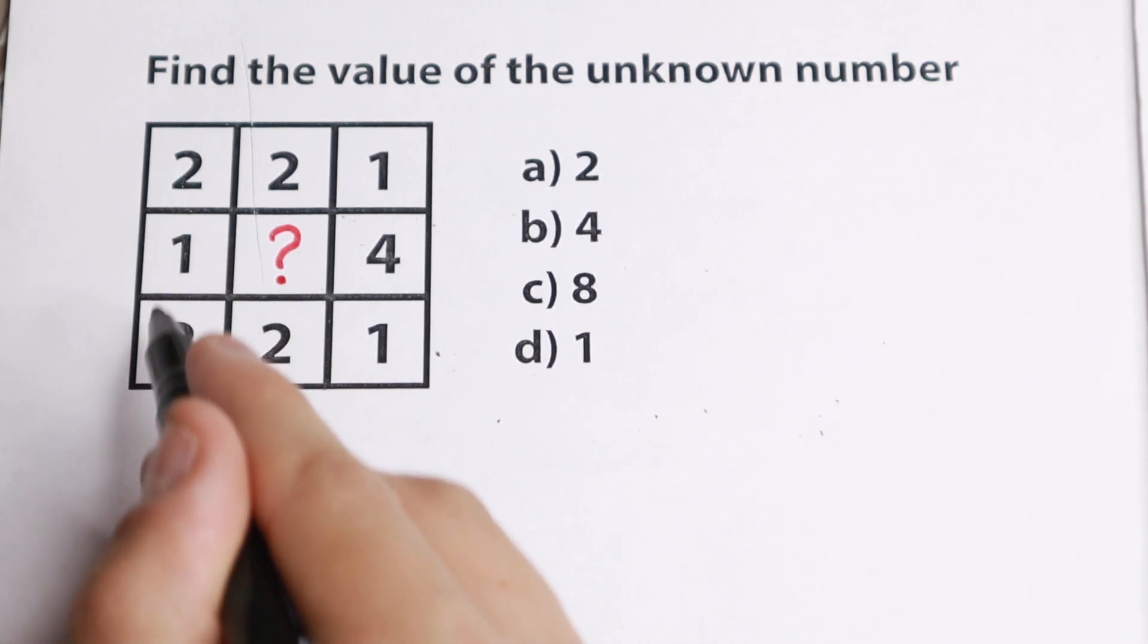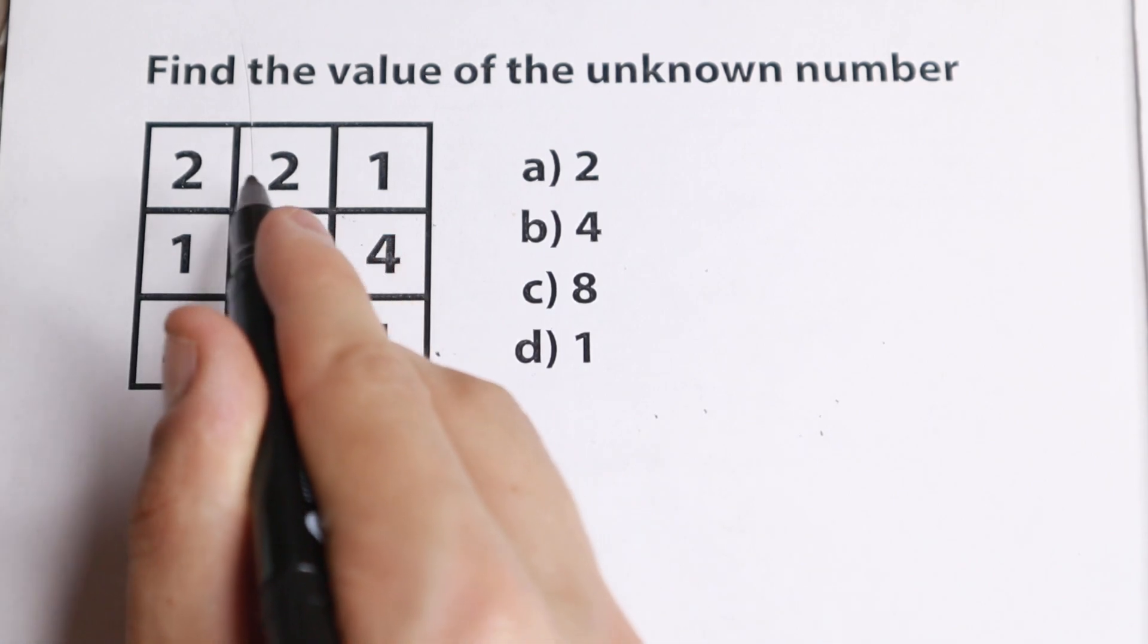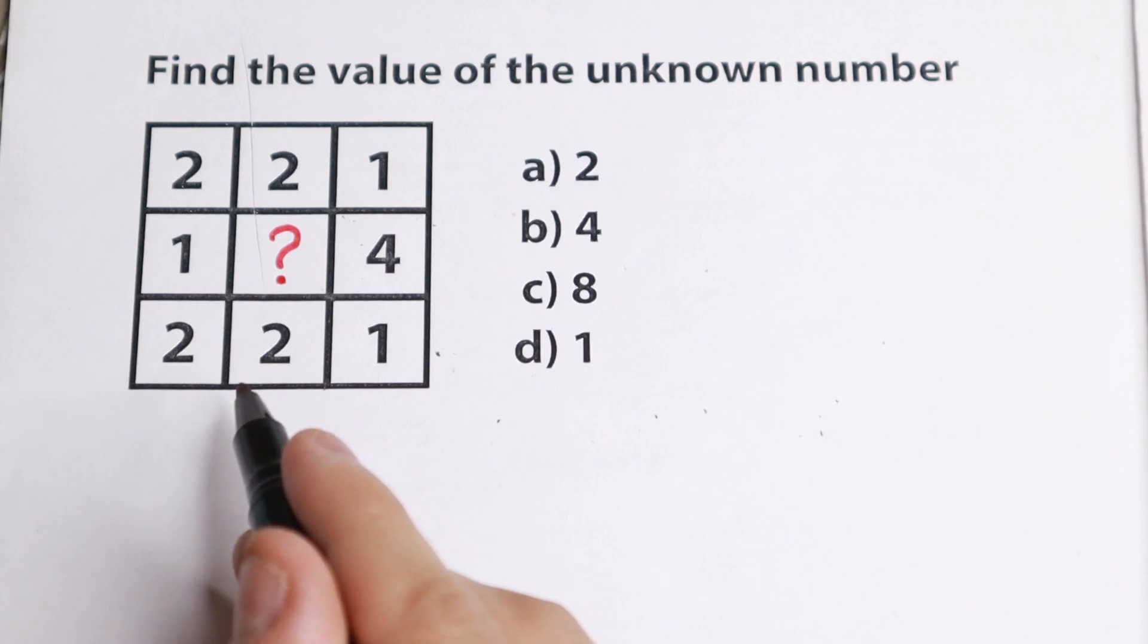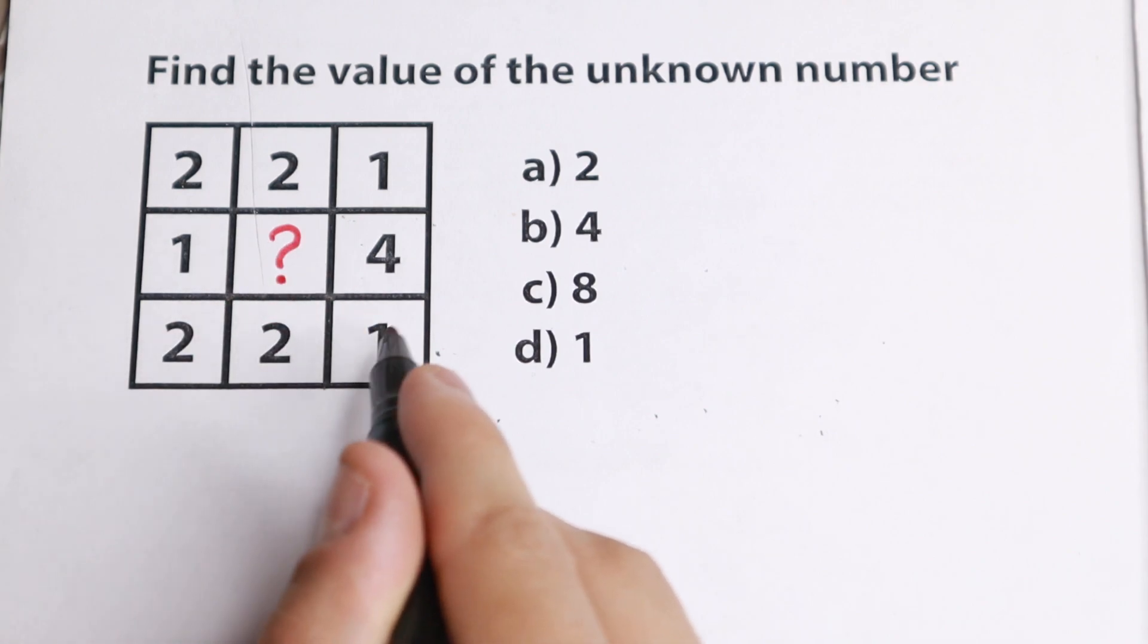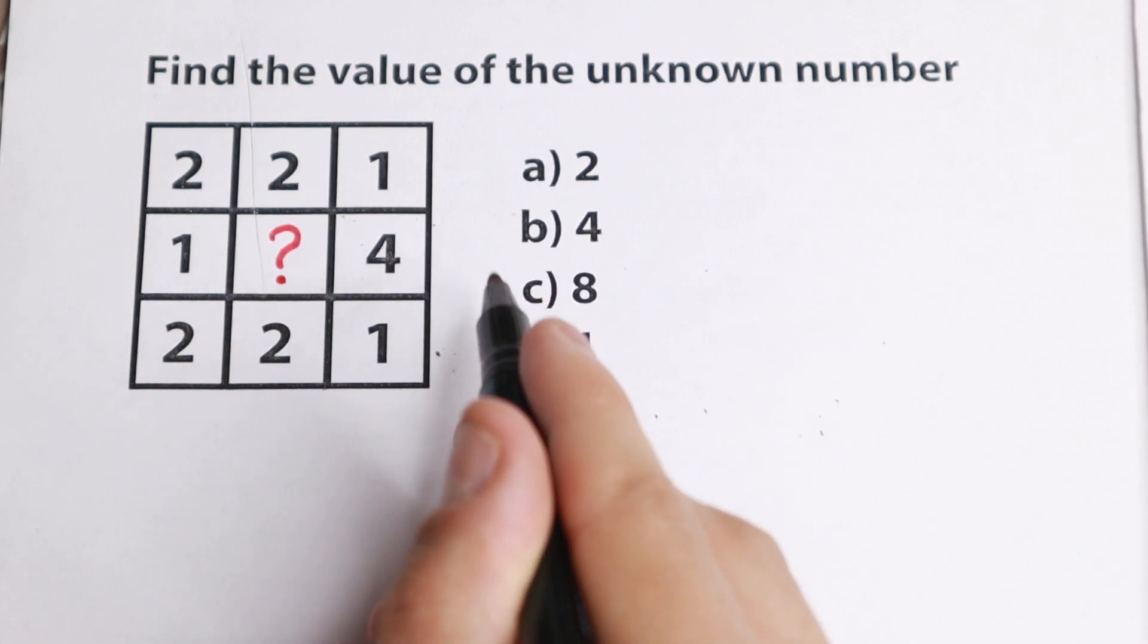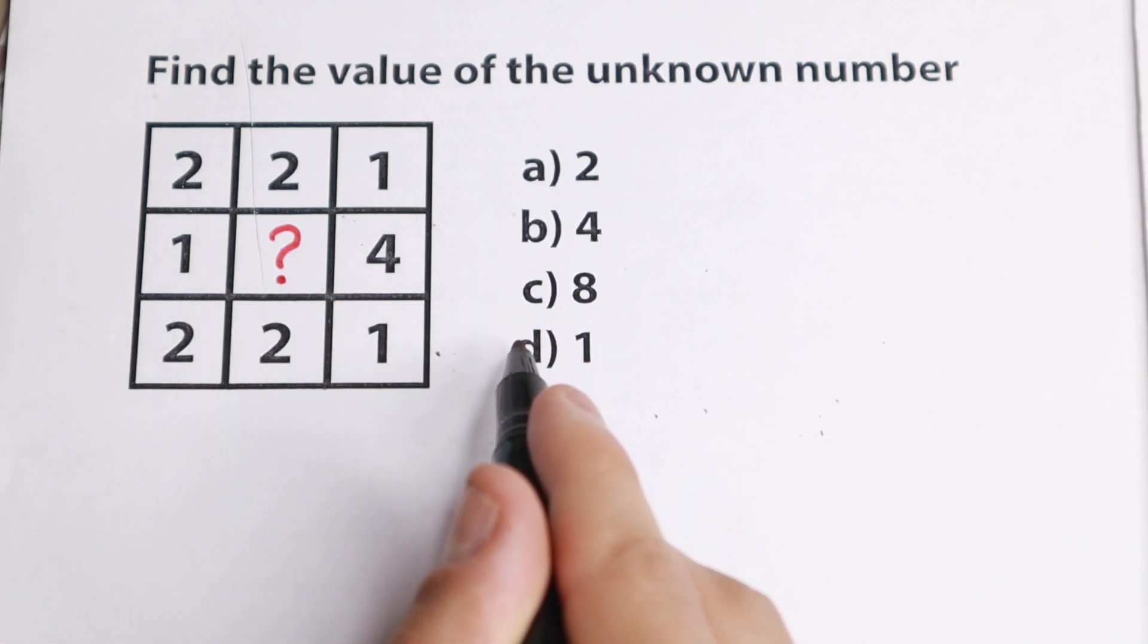Right here we have a lot of rows and lines: 2, 2, 1, then 1, question mark, 4, then 2, 2, 1. A lot of even and a lot of odd numbers, so we cannot work with even and odd numbers. For example, if all numbers were even, then in the middle we'd choose an even number with these options. Of course if odd number, we'd find odd number right here in this option, but there is no other case.